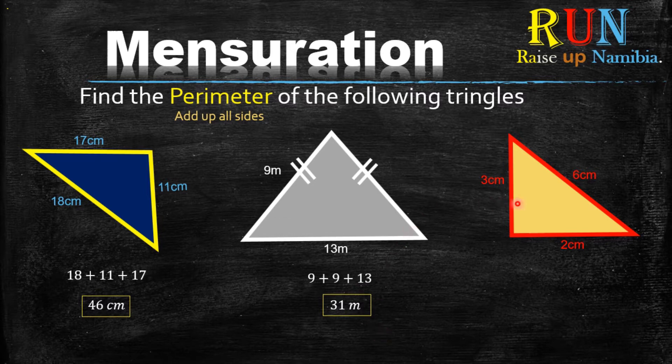How about the third example? It's the same concept. You add all three sides which is 3, plus 2, plus 6, which will give you 11 cm. And just like that, that's how you find the perimeter of a triangle.